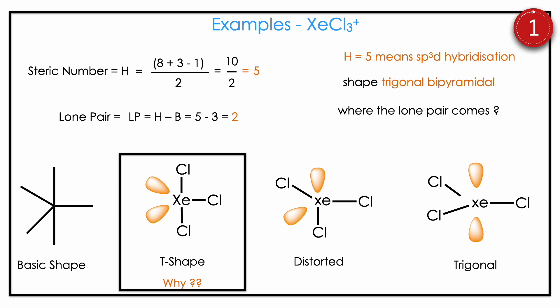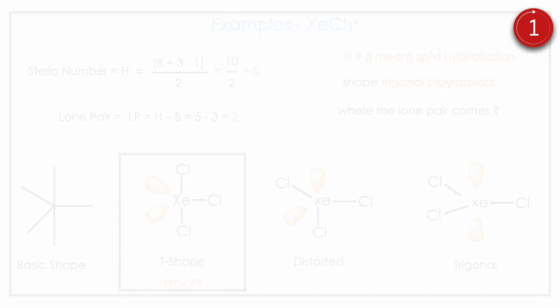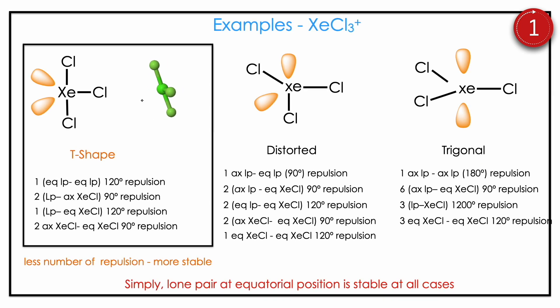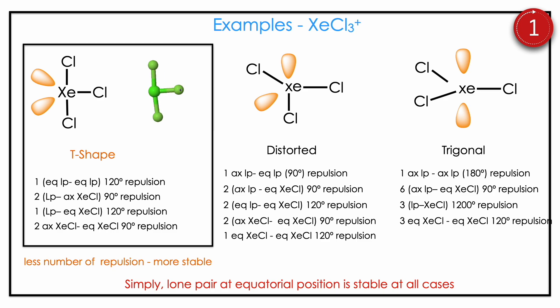Let us look at the xenon trichloride anion XeCl3−. Xenon has a noble gas configuration, so valence is 8. Bonded atoms are 3, charge is −1. H = (8 + 3 − (−1)) / 2 = 10 / 2 = 5. Lone pair = 5 − 3 = 2. H = 5 means sp3d hybridization and trigonal bipyramidal geometry. The question is where the lone pairs go — lone pairs always come in equatorial positions. Other possible arrangements (axial-equatorial, axial-axial) are less stable. Lone pair in equatorial has fewer repulsions — almost T-shape has only 6 repulsions while others have nearly 10, making them unstable. So lone pair on equatorial is always the stable choice.